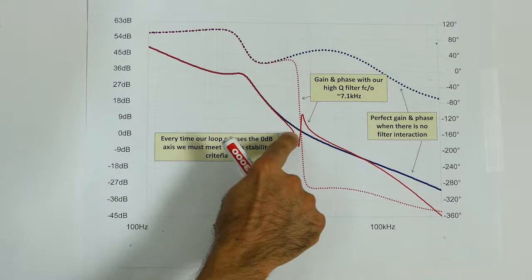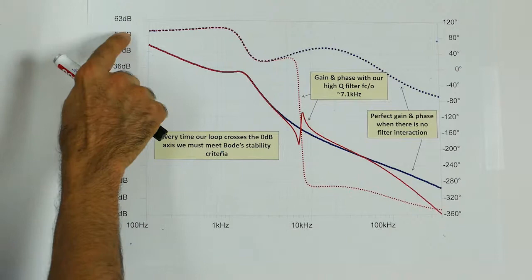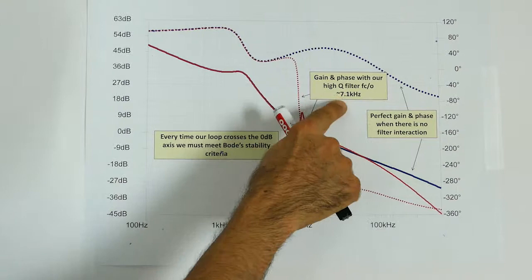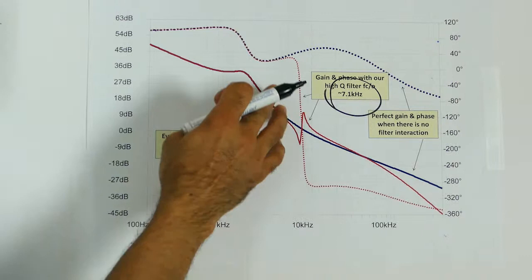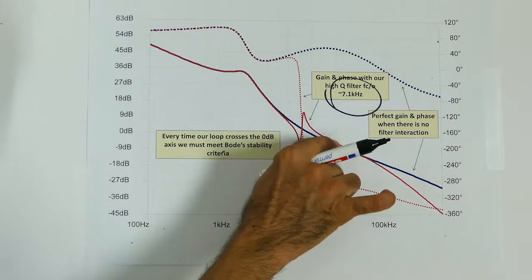You can also see from the phase the red trace on the phase collapses at the cutoff frequency or the resonance frequency of the filter which in this case is around 7 kHz. Now if your loop is crossing the 0 dB axis several times you have to meet the stability criteria every time and that is why this causes an instability problem.